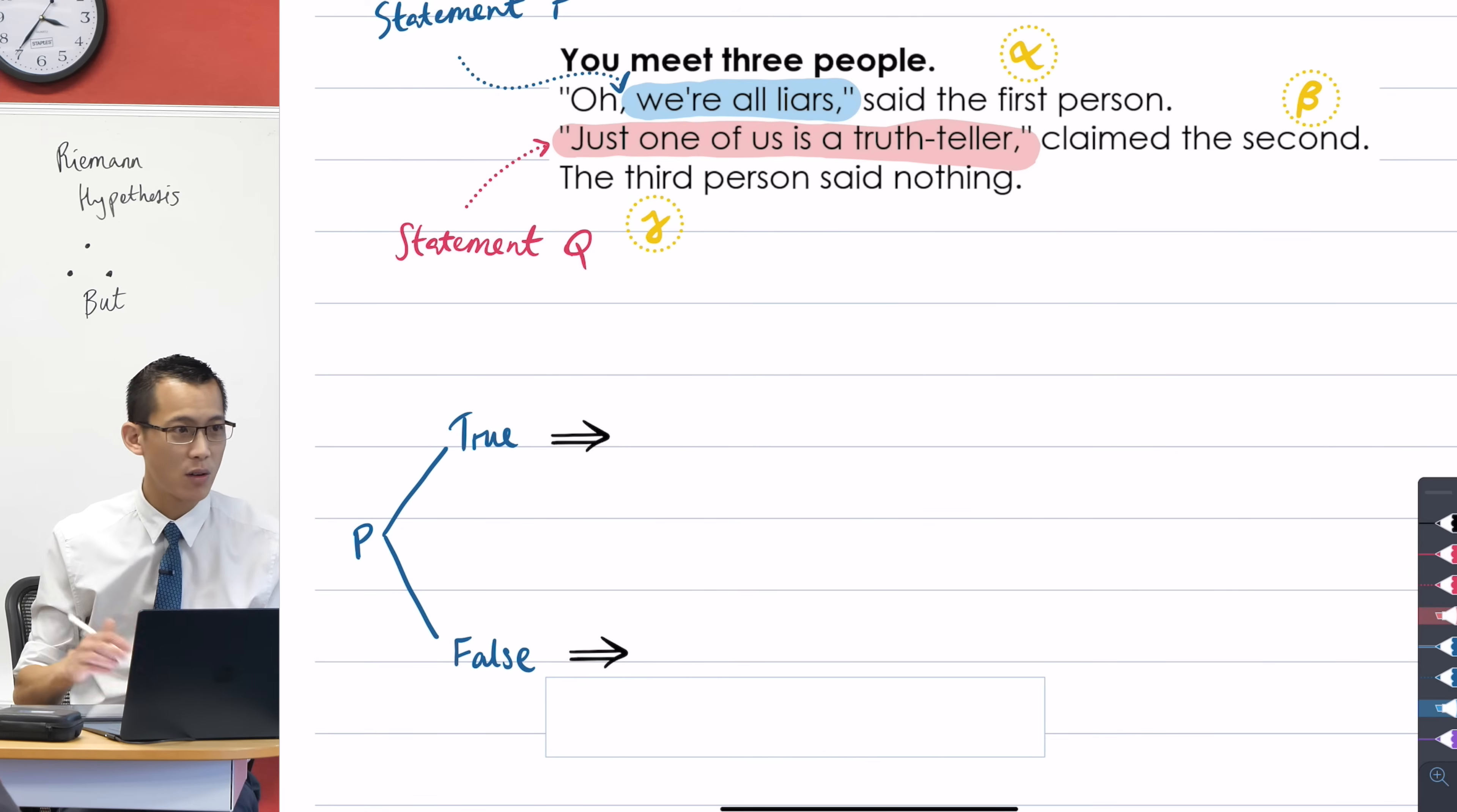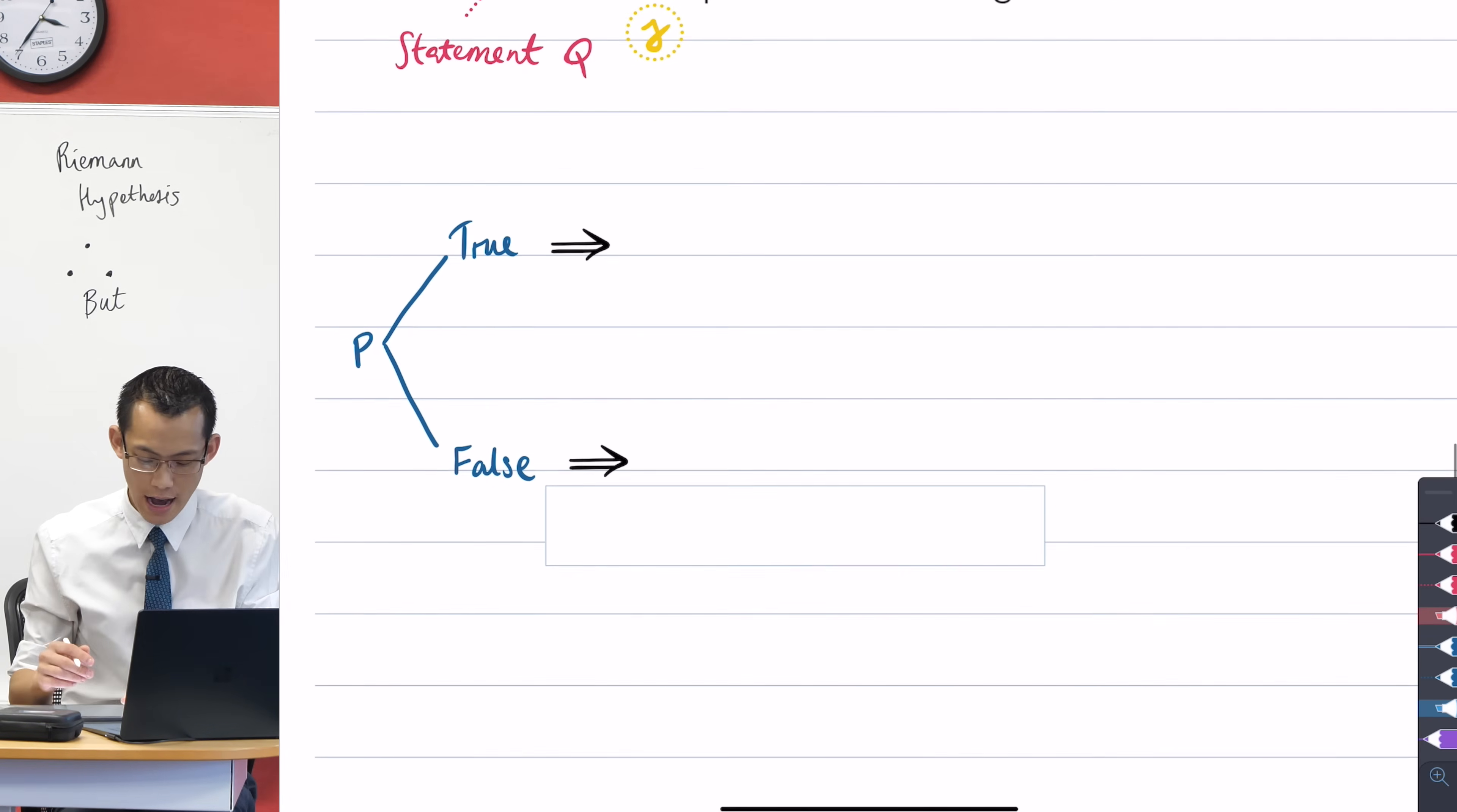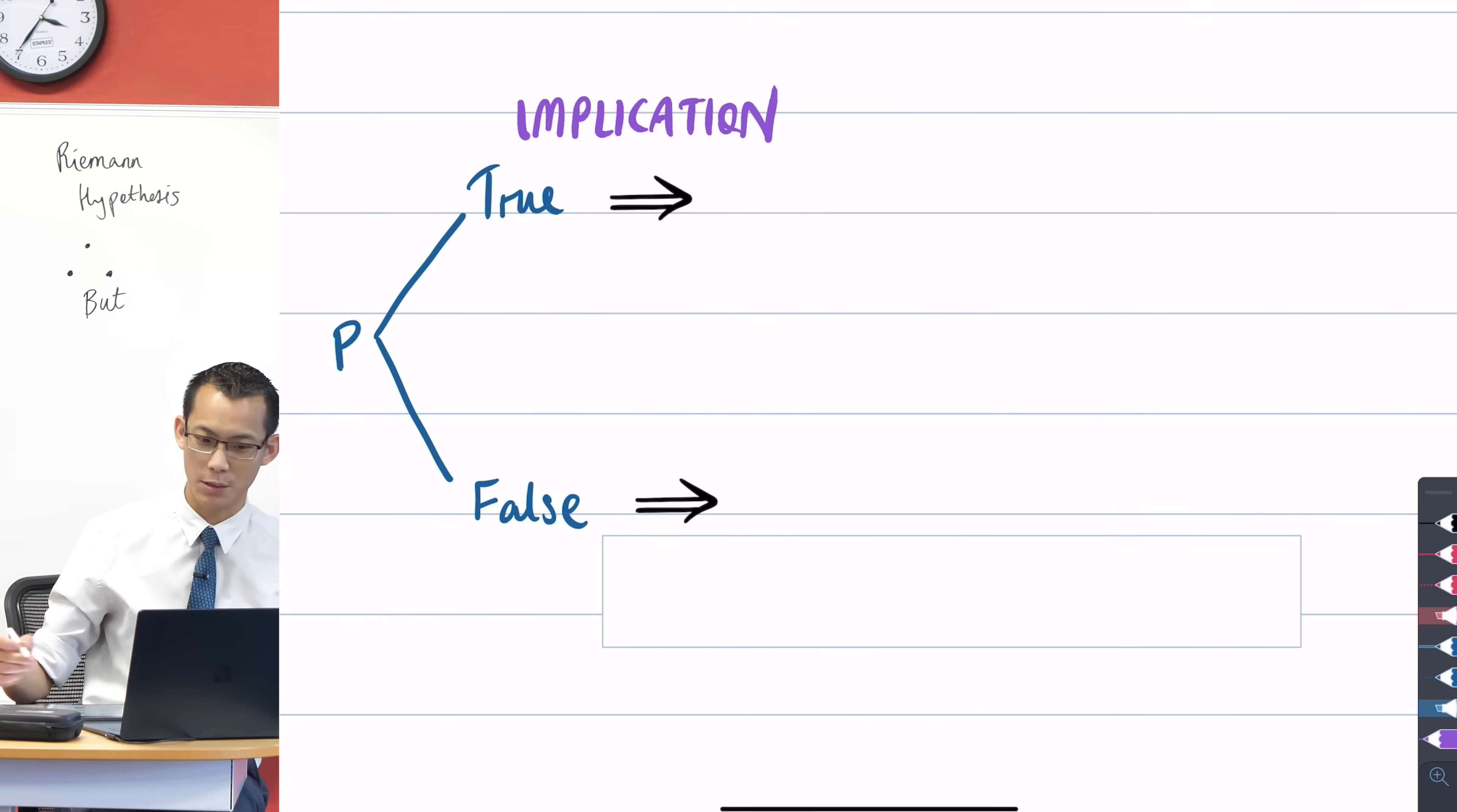That's actually a really important word which I'm going to introduce to you. We're going to consider what flows if the statement P is true and if the statement P is false. Every time I put in some new words, I'm going to put in purple just so it highlights for you. That logic is called an implication. If this statement is true, it implies, and we use this arrow symbol, it implies other things.